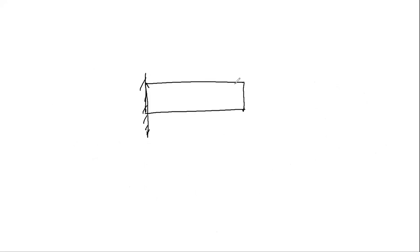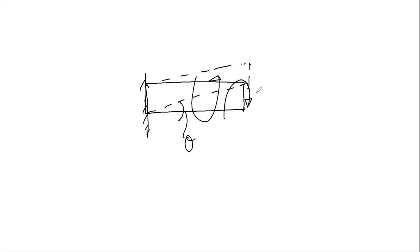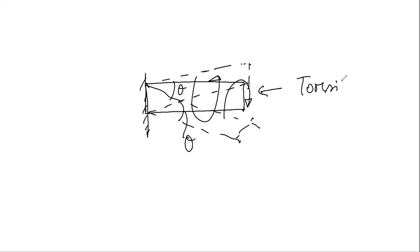For twisting in torsion: you can keep one end fixed, then twist in any direction you choose. According to that, an angle of twist will be created. Whatever direction you twist it, an angle of twist will be created — either this direction or that direction. This is called torsional loading.